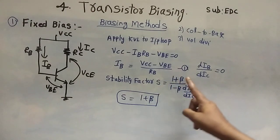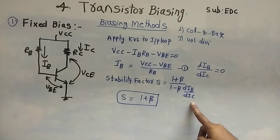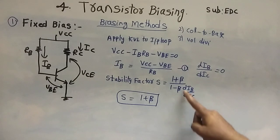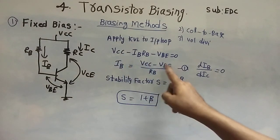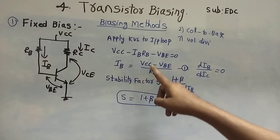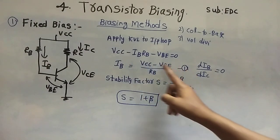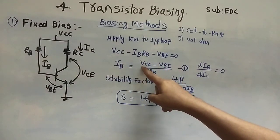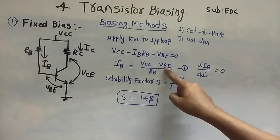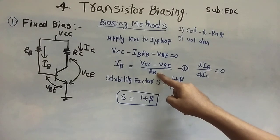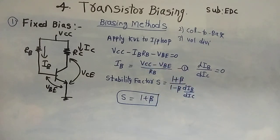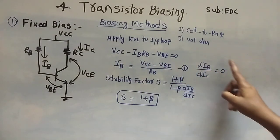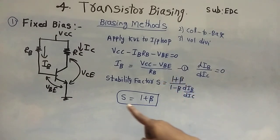We know that the stability factor S equals (1 plus beta) divided by (1 minus beta times dIB/dIC). The unknown here is dIB/dIC. We know the IB value, so we differentiate IB with respect to IC. Differentiating the IB equation: VCC is constant, VBE is also constant, and RB is a fixed resistor, so all are constants. The differentiation of a constant is zero, giving dIB/dIC equals zero.